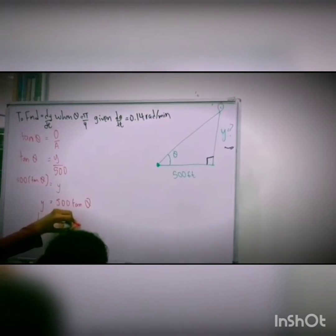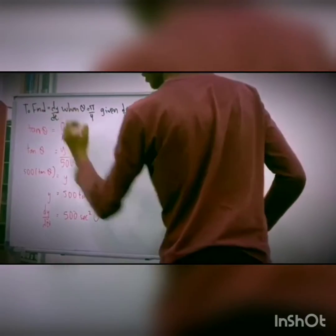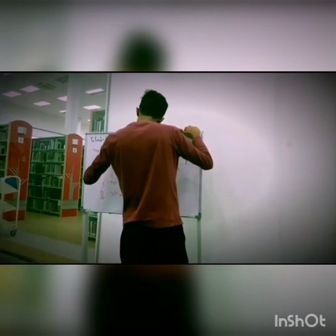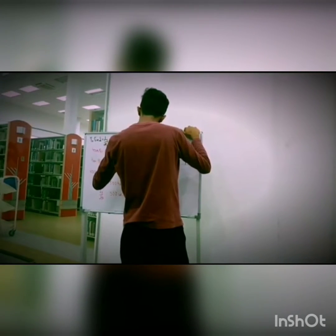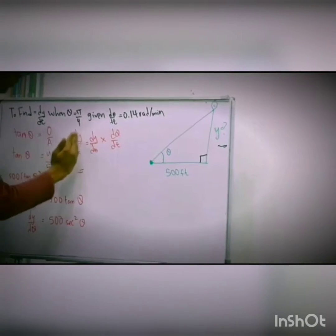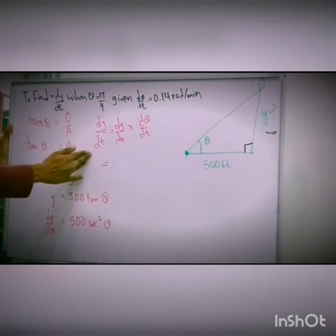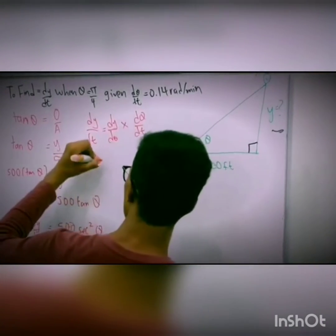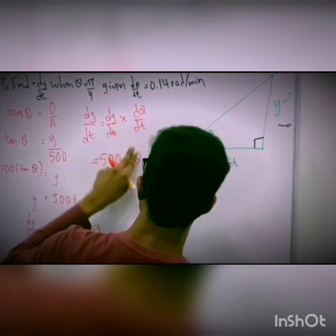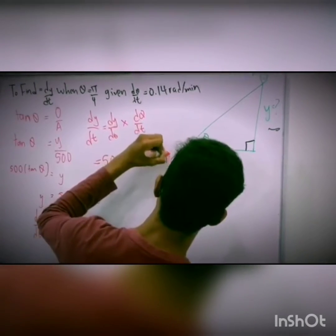dy over dt, we get 500 secant squared theta. Now that we have both of our values, to find this, what we will do now is compute dy over dt which is dy over d theta times d theta over dt. As you can see, this cancels off and we just multiply both values and we get dy over dt. Now we define our values here: dy over dt is 500 secant squared theta and d theta over dt is 0.14.